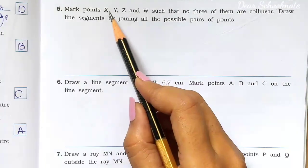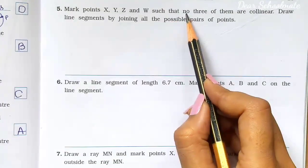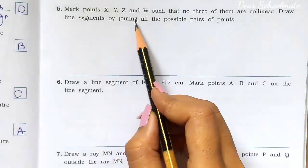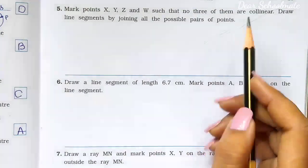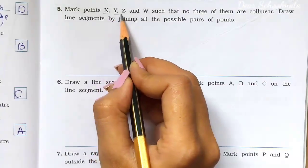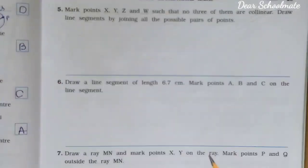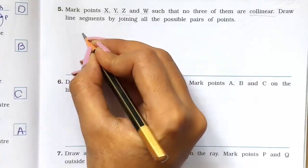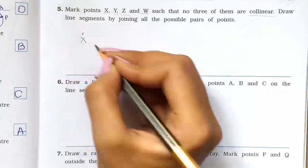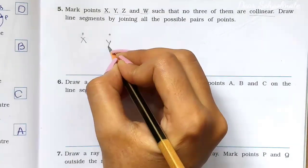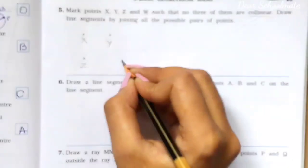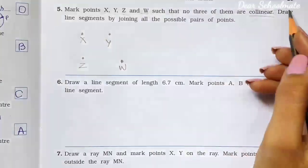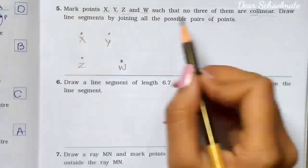Question number 5: Mark points X, Y, Z and W such that no three of them are collinear, then draw line segments by joining all the possible pairs of points. So first we have to make four points, and then name them X, Y, Z, and W.